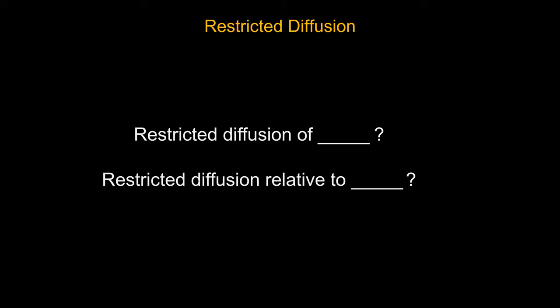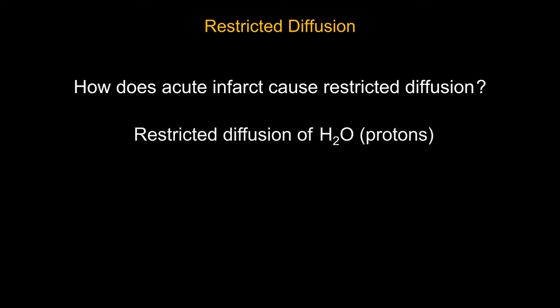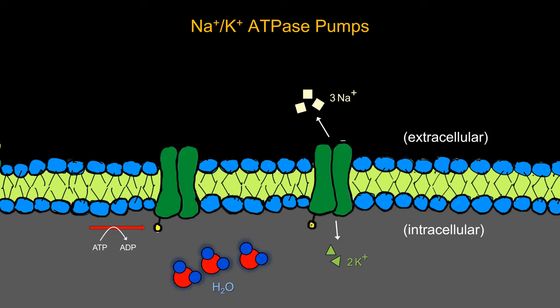When we talk about restricted diffusion, we're essentially talking about restricted diffusion of water molecules compared to the adjacent normal tissue. The question is: how does acute infarction cause restricted diffusion? One of the main theories is that this happens due to failure of the sodium-potassium pump, which is embedded within the cell membrane. Its job is to pump out three sodium and let in two potassium, creating an electric potential across the membrane.